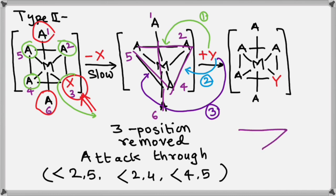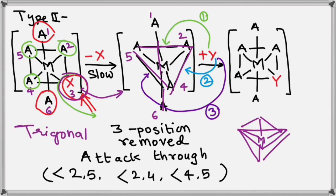So in this case, the intermediate has shape of, or intermediate has shape, trigonal bipyramidal. So when X is present at equatorial position, intermediate is trigonal bipyramidal.